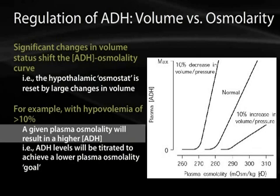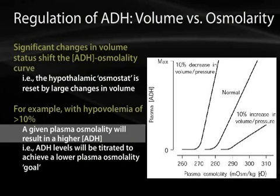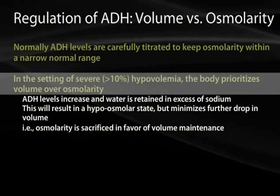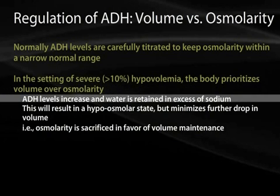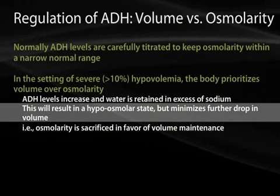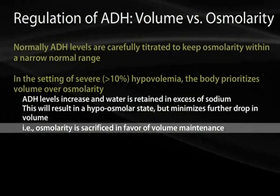Clinically, the more relevant scenario is when there is a greater than 10 percent fall in effective circulating volume. The primary goal is to preserve effective circulating volume, so even when plasma osmolality falls, ADH will be stimulated. In the setting of severe hypovolemia, the body prioritizes volume over osmolarity. ADH levels increase, water is retained in excess of sodium, which may result in a hypoosmolar state, but it minimizes the further drop in volume. In extreme situations, osmolality is sacrificed in favor of volume maintenance.